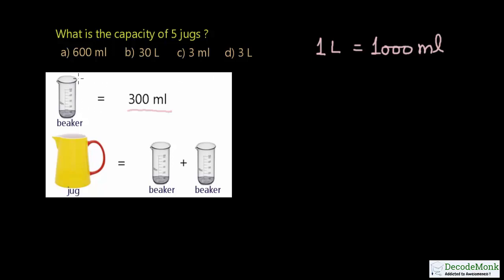So one beaker equals 300 milliliters, and one jug equals 2 beakers.